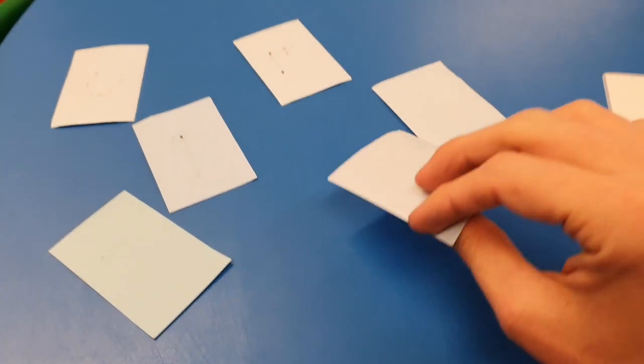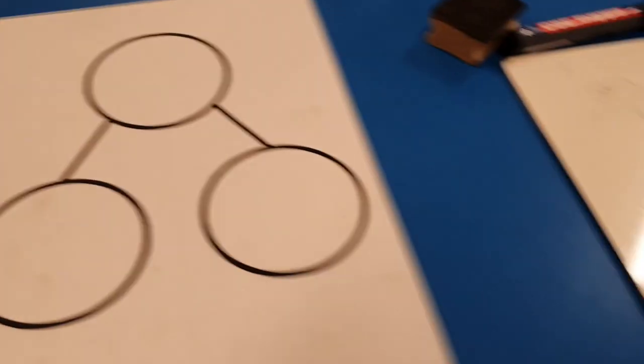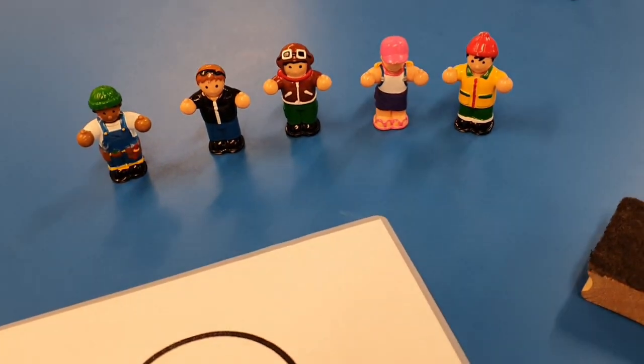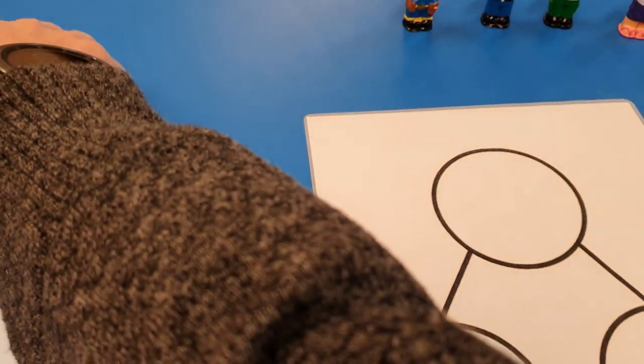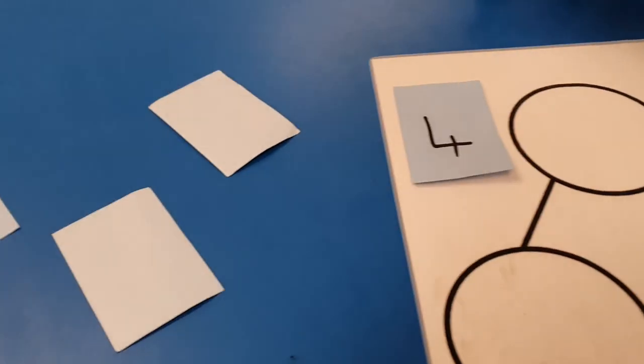Now I've got some cards with some numbers on, and you can make these yourself or you could just roll a dice to find numbers. I've got a whiteboard or you could use some paper to write on, and then I'm going to use these people as counters. So let me choose a card and I've got number four and I'm going to put that there.